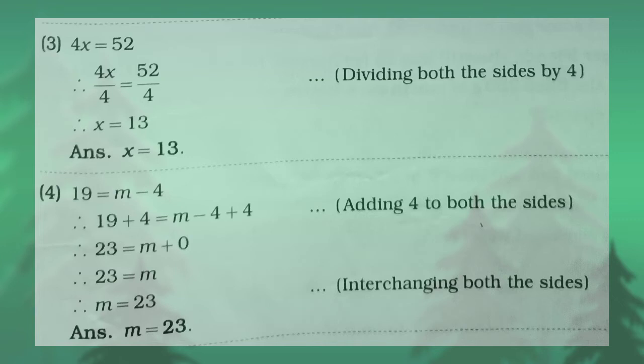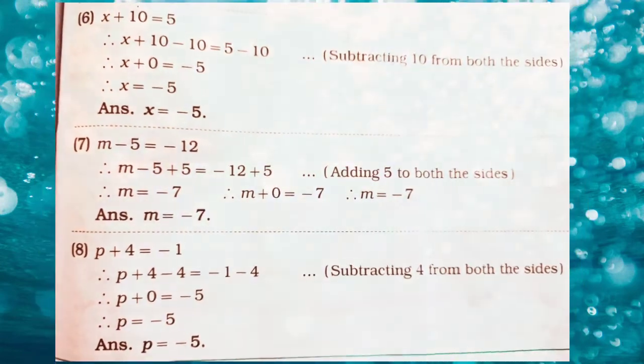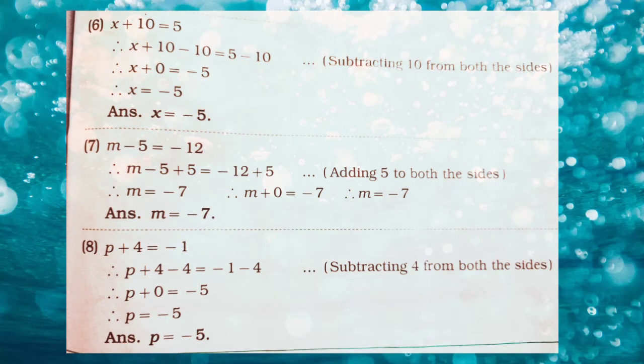The next question is 19 is equal to m minus 4. Here, adding 4 to both the sides, the answer is 23 is equal to m plus 0, which means m is equal to 23. Note down the answer, students. The sixth one is x plus 10 is equal to 5. Subtracting 10 from both the sides, the value of x is equal to minus 5.